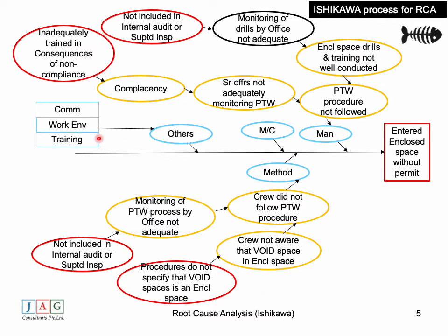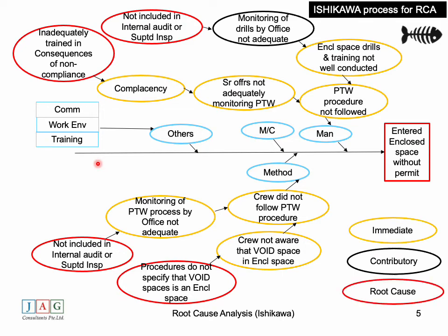There could be other category areas such as communication, work environment, training, or anything else based on the nature of the incident. Looking at the diagram, the yellow-colored items are the immediate causes. The black-colored items can be considered contributory causes to the incident. The red-colored items, which are right at the end of each branch, can be considered the root causes.